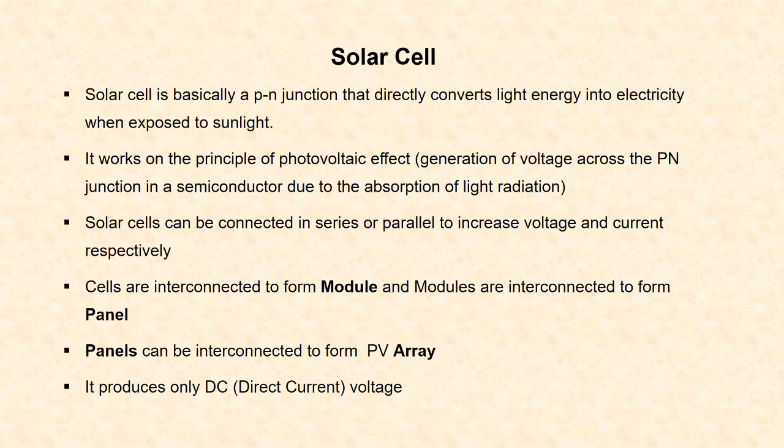Solar cell is basically a p-n junction which converts the light energy from the sun directly into electricity. It works on the principle of photovoltaic effect. When a p-n junction in a semiconductor is exposed to light radiation, it generates voltage across it. This effect is called photovoltaic effect.